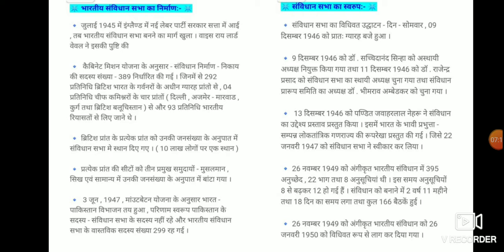It was then decided that a Constituent Assembly of India would be formed. In July 1945, when the new Labour Party government came to power in England, the path to forming the Indian Constituent Assembly was opened by Viceroy Lord Wavell. According to the Cabinet Mission plan, the total membership of the Constituent Assembly was fixed at 389 — of which 292 representatives were from 11 provinces under British India Governors, 4 representatives from Chief Commissioner's provinces such as Delhi, Ajmer, Marwar, and Coorg, and 4 from British Baluchistan.